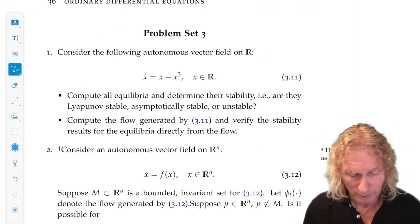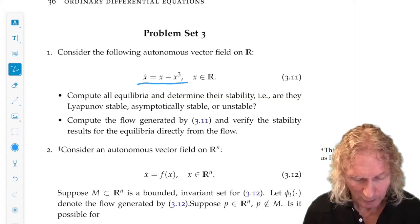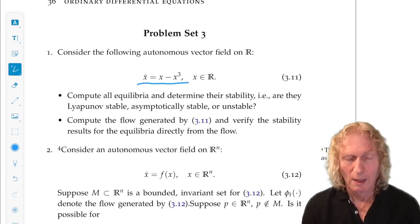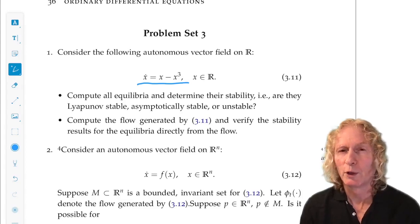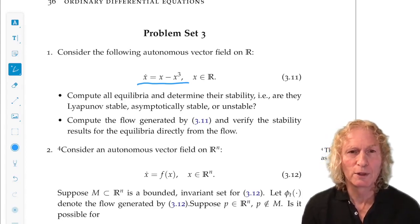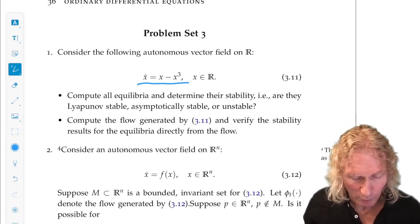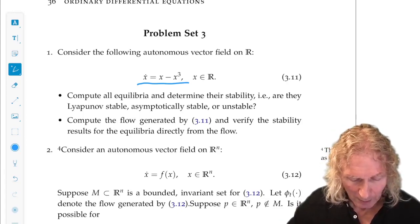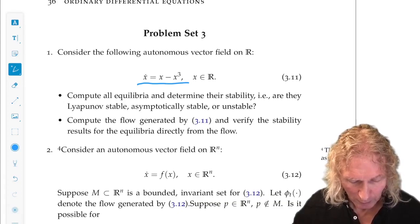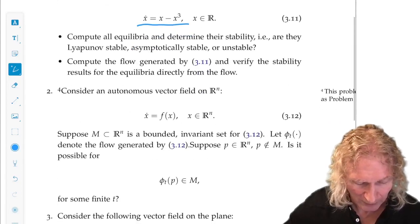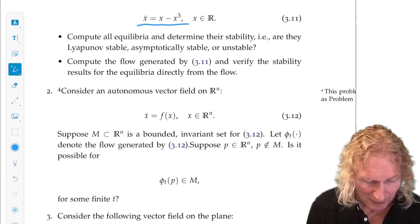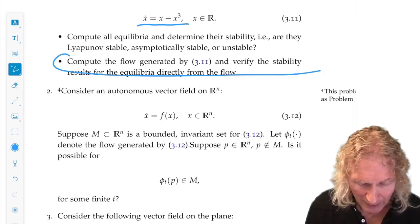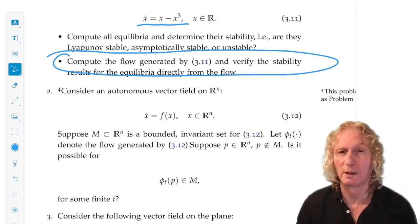All right, you saw this example. We talked about this example already. Now what I want you to do is use the language and definitions that I've developed to say much more about it. Talk about stability, the nature of stability, homoclinic and heteroclinic orbits, and then give a try at analytically computing the solutions.